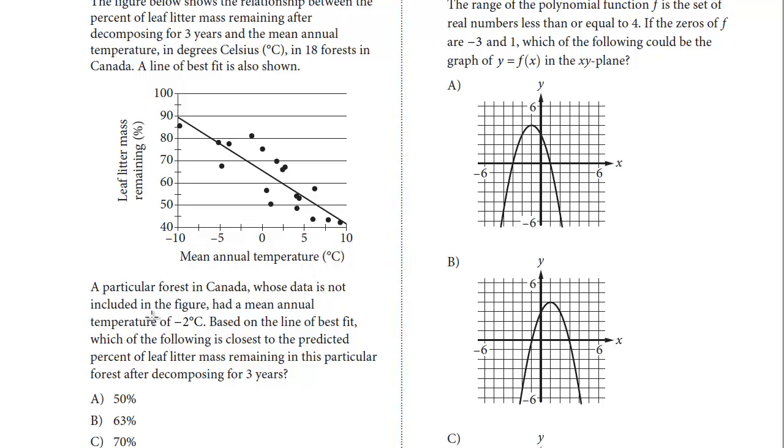So let's take a look at the question. A particular forest in Canada whose data is not included in the figure has a mean annual temperature of negative two degrees Celsius. Based on the line of best fit, which is the closest to the predicted percent of leaf litter mass remaining in this particular forest after decomposing for three years.